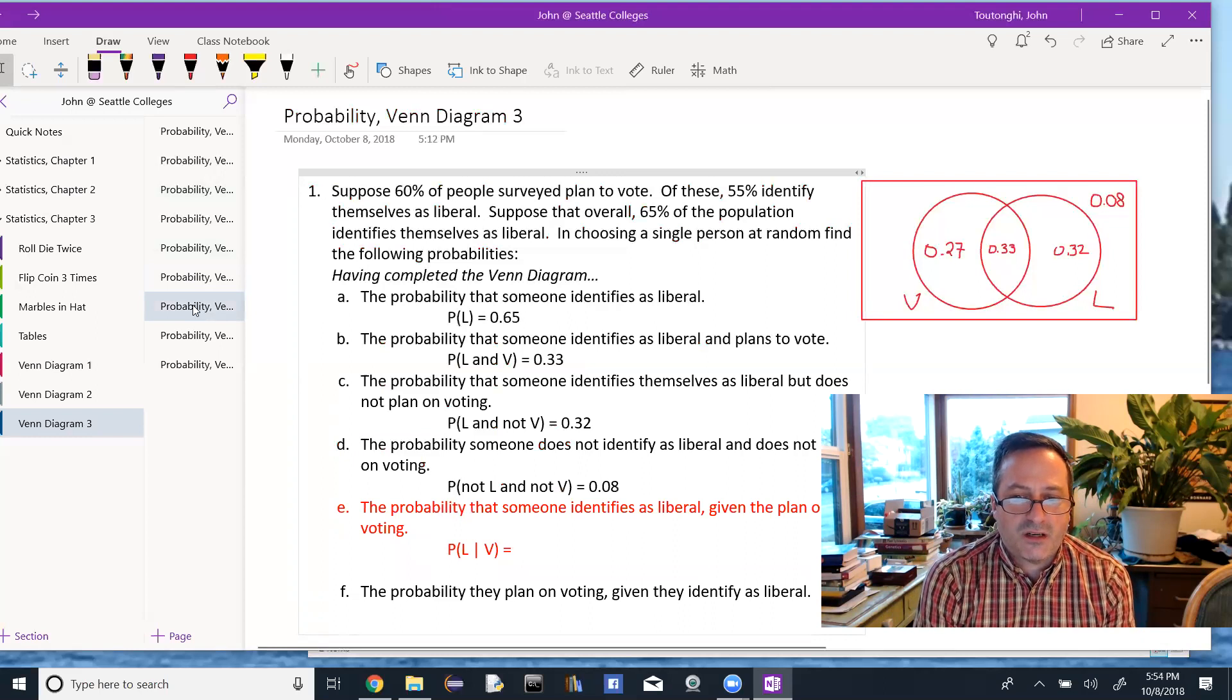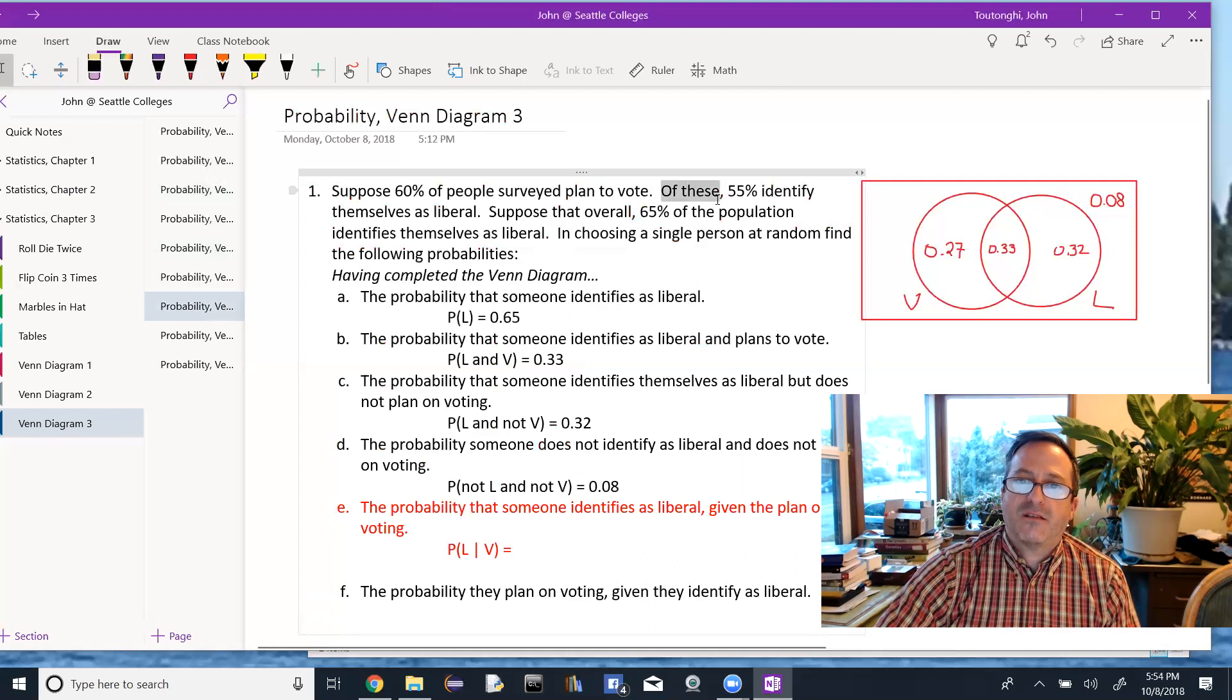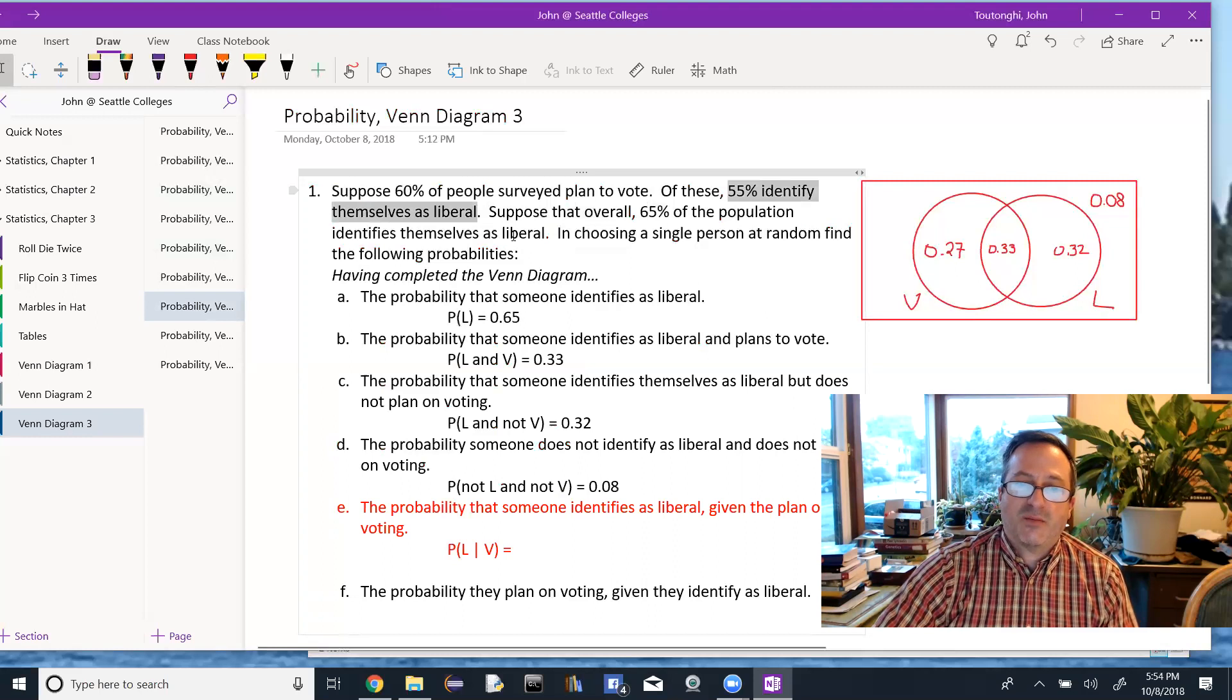The last two are conditional probabilities. The probability that someone identifies as liberal, given that they plan on voting. We actually know this, it's the 55% up here. If we know they're going to vote, 55% of them identify as liberal. So that's exactly what the conditional probability means. What's the probability, if you know that they're going to vote, that they're also liberal. That's 55%.